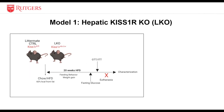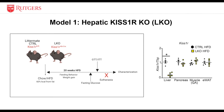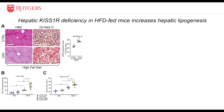We first employed a hepatic KIS1R knockout mouse model, where we took knockout mice and littermate controls and placed them on high-fat diet for 20 weeks. We performed various metabolic tests before euthanizing and characterizing these mice, and also confirmed knockout of liver KIS1R. We observed that knocking out KIS1R in the liver showed a substantial increase in steatosis as seen by H&E. Liver lipids were also quantified using Oil Red O stain, which marks lipids in red, and we see a significant increase in our knockout mice.